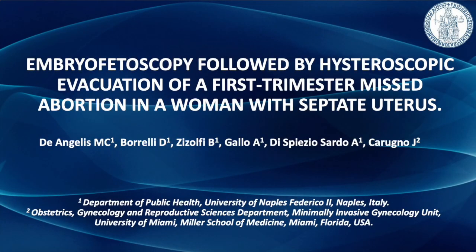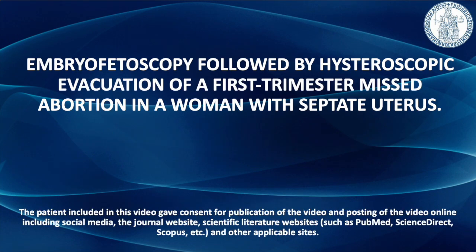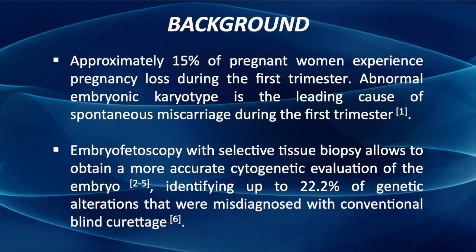Embryofetoscopy followed by hysteroscopic evacuation of a first-trimester misabortion in a woman with septate uterus. 15% of pregnant women experience pregnancy loss during the first trimester. Abnormal embryonic karyotype is the leading cause of spontaneous miscarriage during the first trimester. Embryofetoscopy with selective tissue biopsy allows a more accurate cytogenetic evaluation of the embryo.